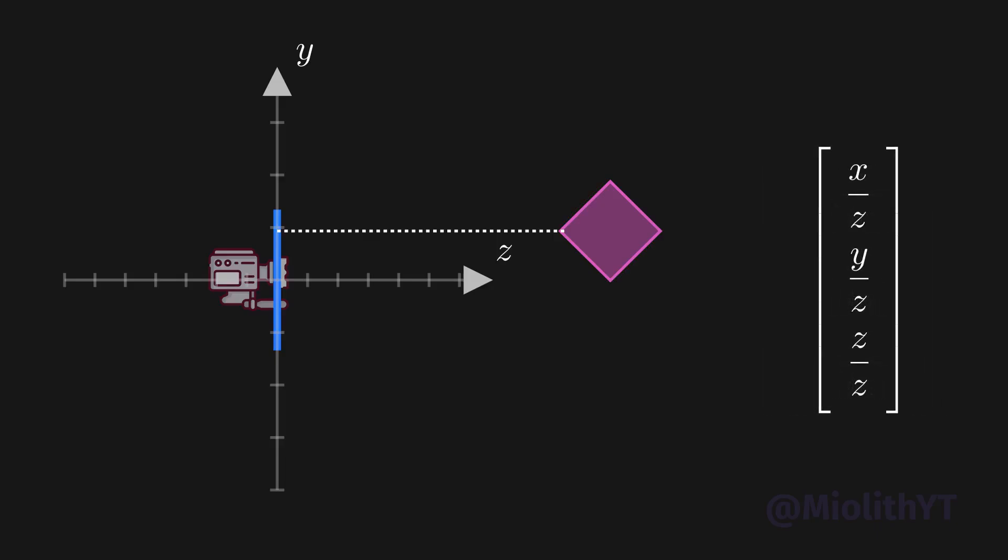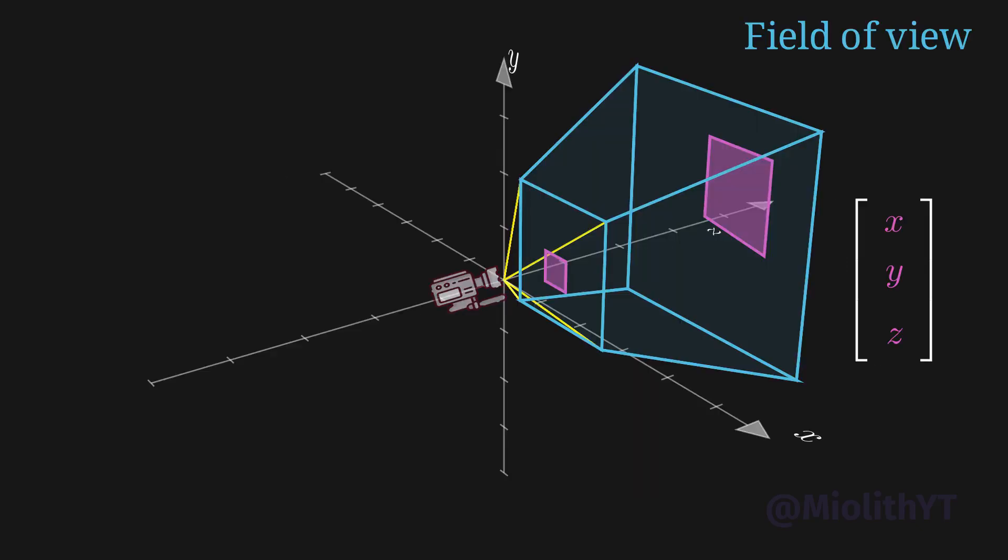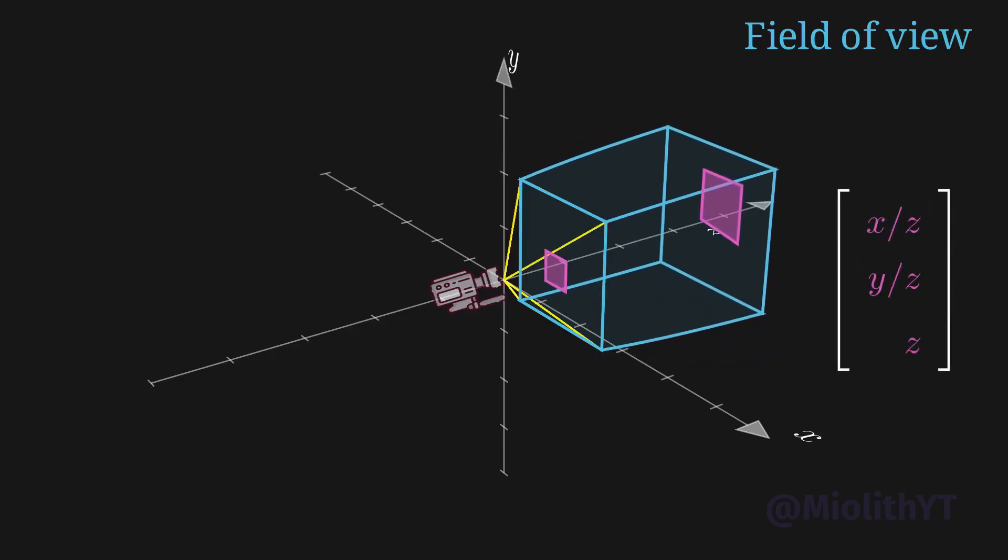Or negative z if the camera is looking toward, well, negative z. This division can be geometrically illustrated as a 3D scene where you project the field of view, which is a pyramidal frustum, into a rectangular prism. As you can see, this operation shrinks the object at the end of the frustum.